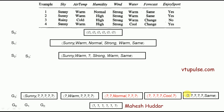Now we check whether all five hypotheses are consistent with all examples seen so far. For the first hypothesis — sunny, question mark, question mark, question mark, question mark, question mark — sunny matches with examples 1 and 2 (positive, expected positive) and does not match rainy in example 3 (negative classification, expected negative). So it is consistent with all three examples and we retain it.